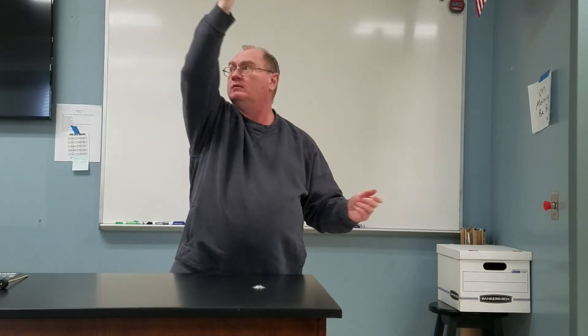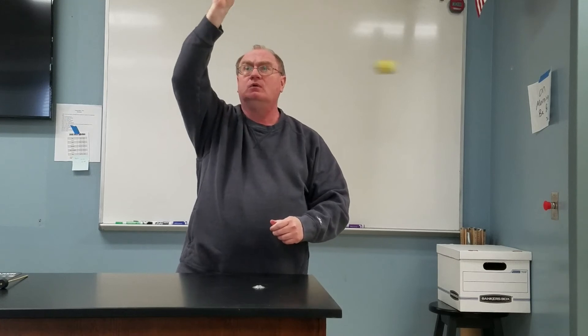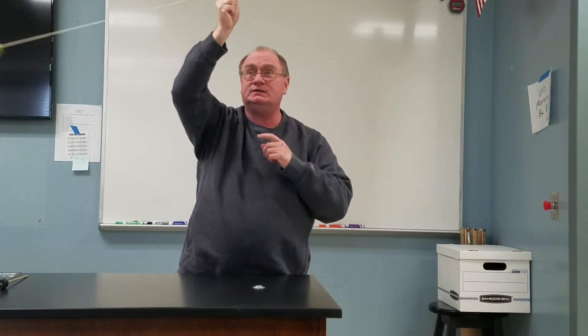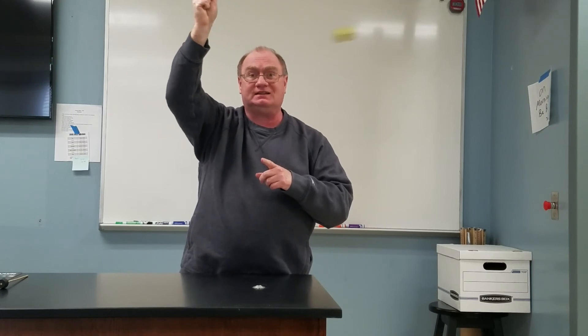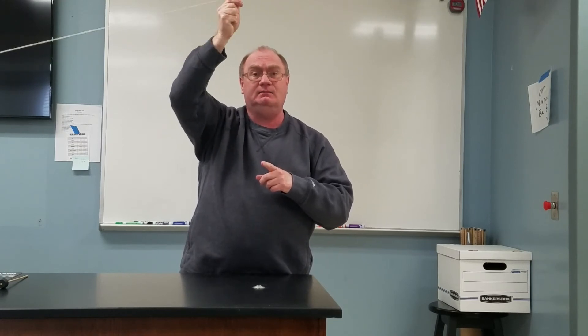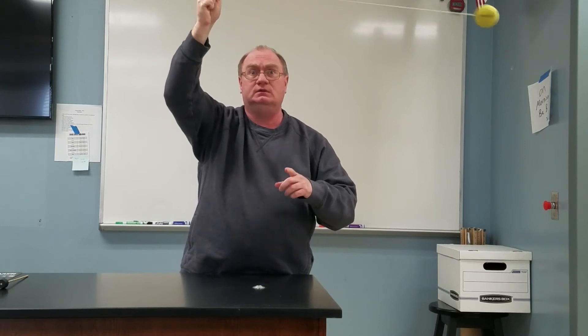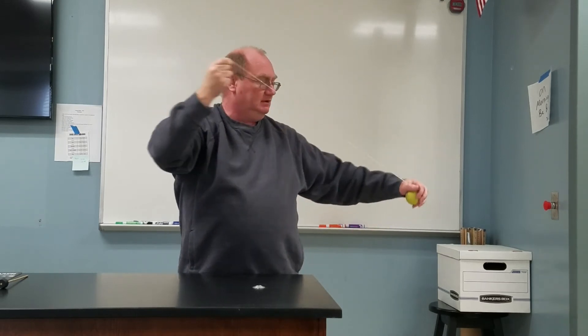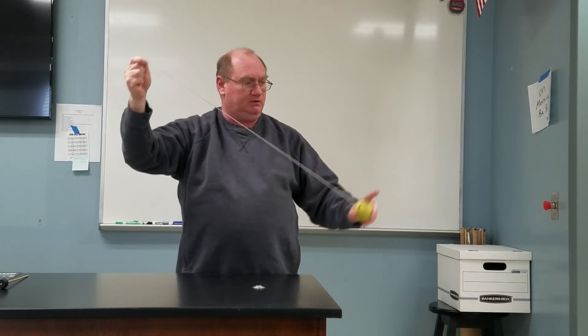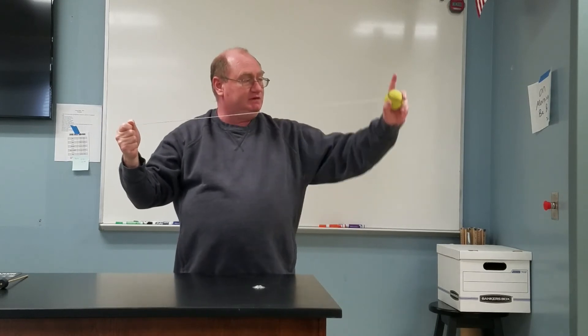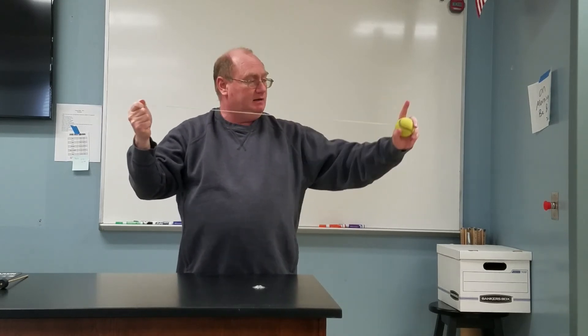We've got a 10-spot on the end of a string, and if I swing it around, we get it going in a circle. Now what's causing it to go in a circle is the tension in the string. The string is constantly pulling in and making the ball go around in a circle. Let me stop it.